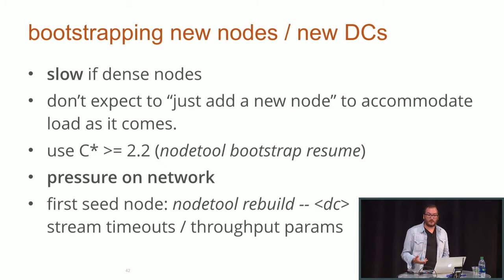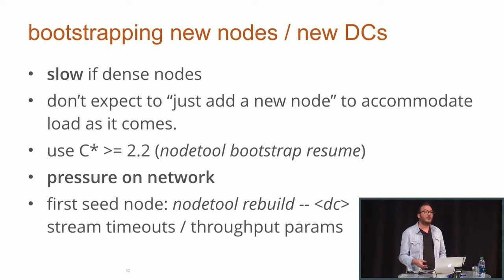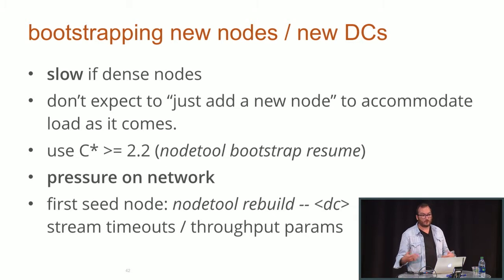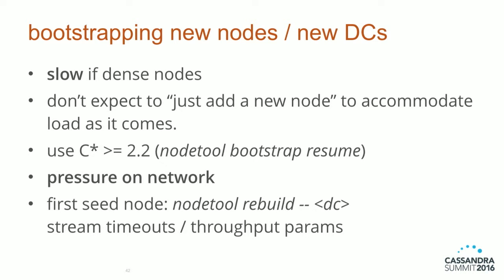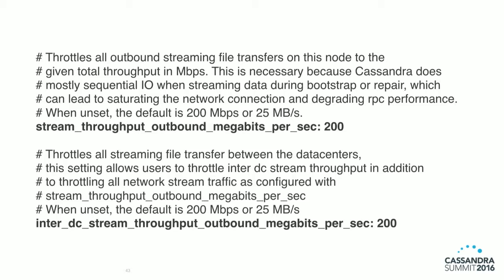Cassandra 2.2 was a lifesaver for bootstrapping because it introduced bootstrap resume. Before that, if you had network problems everything failed and you had to restart from the beginning. So 2.2 fixed that, which is pretty great. What you'll see during bootstrapping is that the pressure on the network is pretty high, so you'll need to play with some streaming properties — there are throttles by default on what traffic gets sent across data centers.